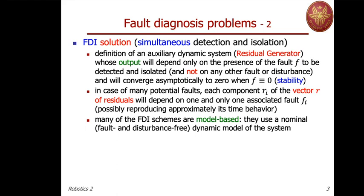These schemes are typically model-based — we use a nominal dynamic model of the system being monitored. Nominal means we know how the system behaves when there are no disturbances and no faults. This is strong information we assume to have. When we don't have a model, we resort to signal-based fault diagnosis methods that can still do detection and isolation simultaneously.